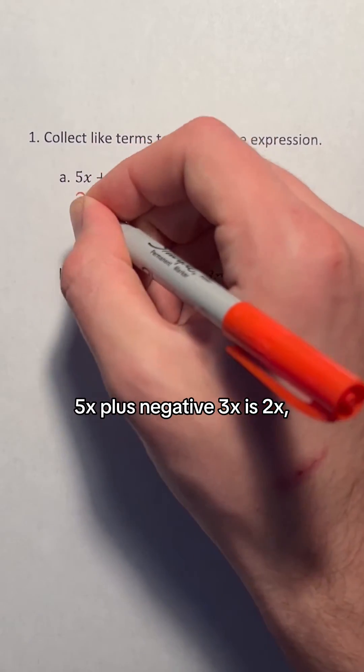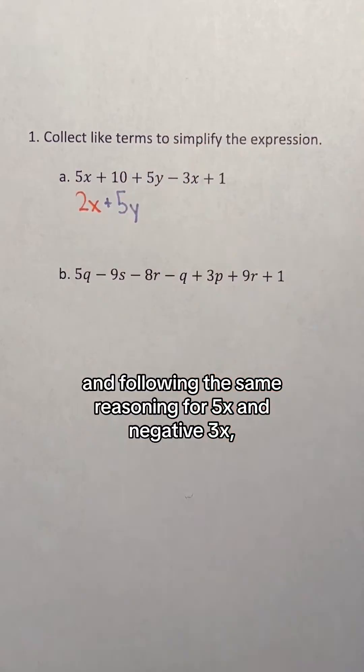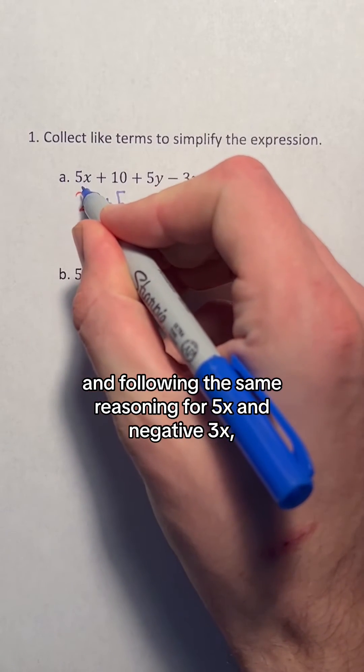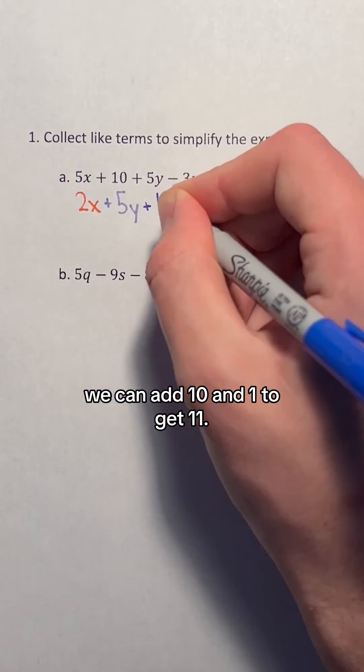5x plus negative 3x is 2x. 5y is by itself. And following the same reasoning for 5x and negative 3x, we can add 10 and 1 to get 11.